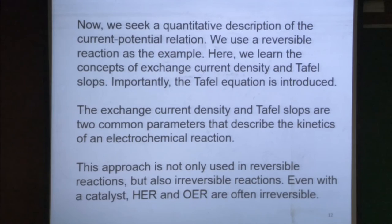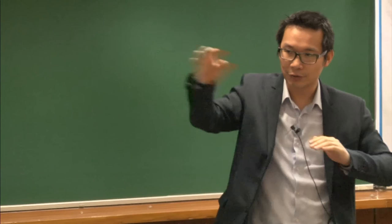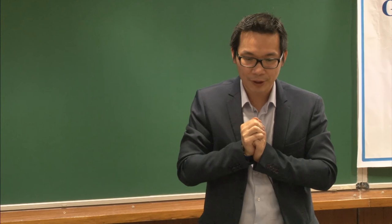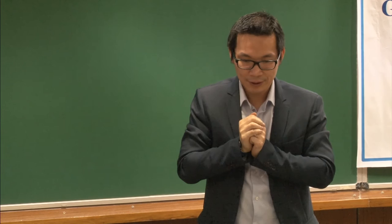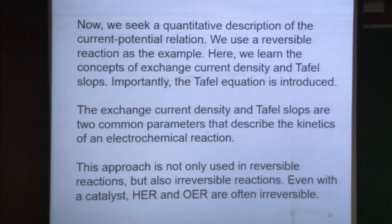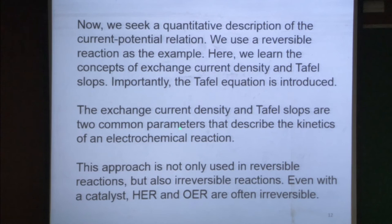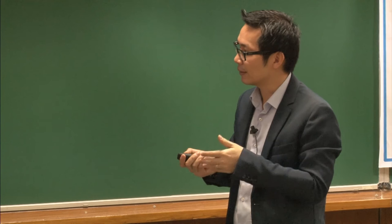We've talked about overpotential, current density, and how they're related, and why we need catalysts. Now we seek a quantitative description of the current-potential relationship. Qualitatively, more overpotential means higher current. But in scientific research, we need a quantitative relationship. This is the so-called Tafel equation for ideal systems, which gives us the concepts of exchange current density and Tafel slope — two common parameters that describe the kinetics of an electrochemical reaction.